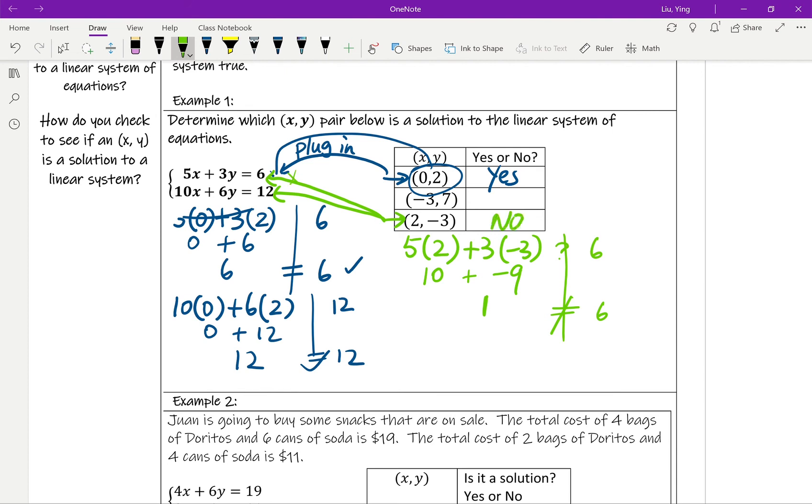So at this point, we can just say no here, because in order for the solution to work for the whole system, both equations have to be true. But if we already found one is not true, then we don't have to check the other one.